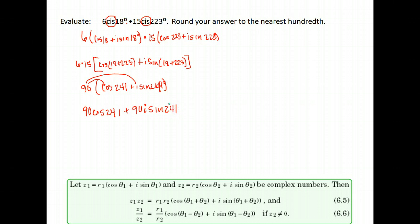I'll have 90 times the cosine of 241 plus 90i sine 241. Go ahead and multiply: 90 times the cosine of 241 is negative 43.63.